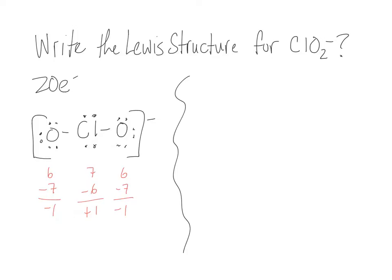But is there a better Lewis structure that we could draw for this, one that still obeys the octet rule, but one that has a better formal charge? Remember with formal charge we like to have numbers that are closer to zero. And they all certainly need to add up to the overall charge on the compound, in this case minus one.